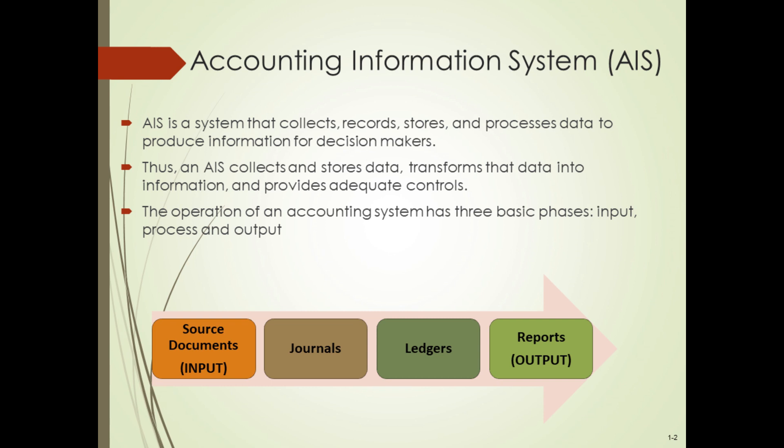The operation of an Accounting System has three basic phases: input, process, and output. A system processes source data as an input and generates useful information as an output.